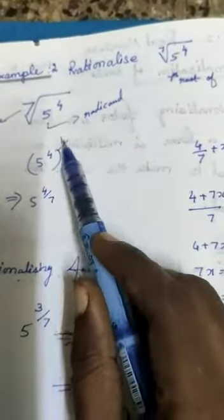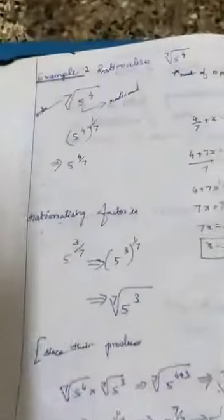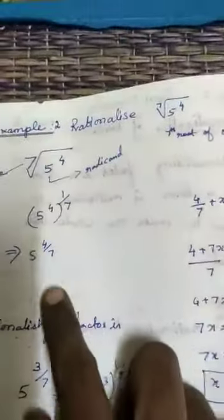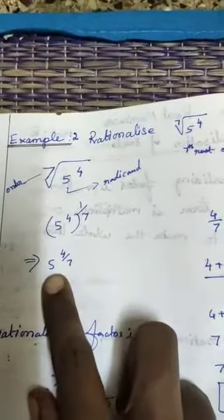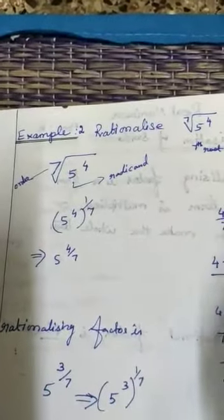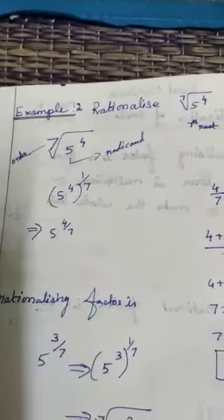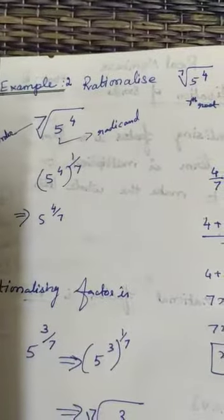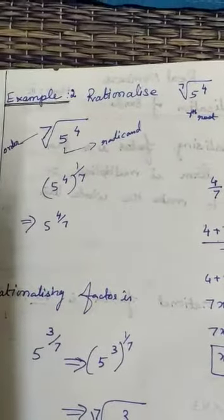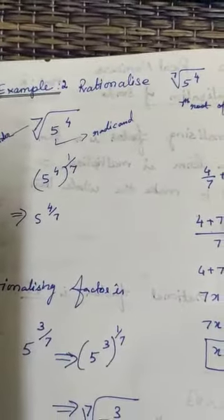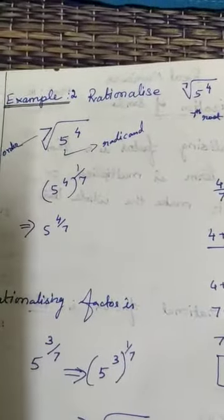Using laws of exponents, 4 into 1 by 7. Now the base is always equal - we can't change the base, just change the power and make it as a rational number. 5 power 1 is a rational number.